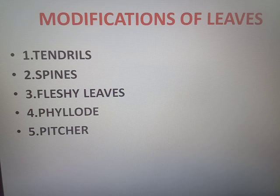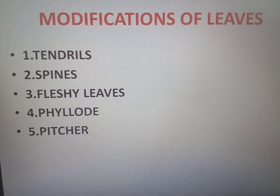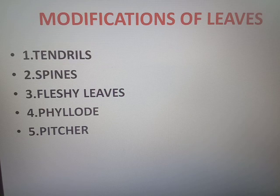The next modification is fleshy leaves. Food is stored as fleshy leaves in the case of onion and garlic. Then the next one is phylloclade, which is seen in the case of asparagus.